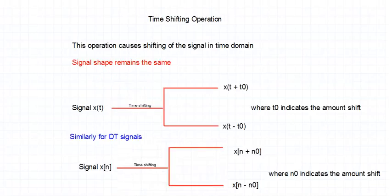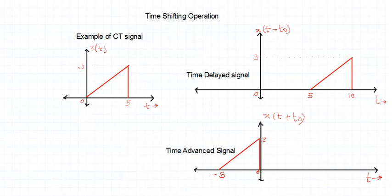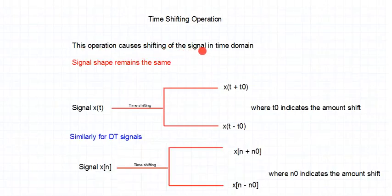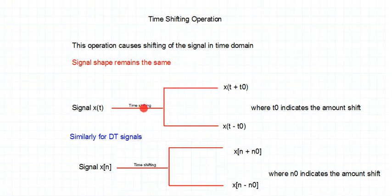We will first look at the time shifting operation. As the name indicates, it is going to shift the signal with respect to time. This particular operation causes shifting of the signal in the time domain. When you are doing this particular operation, the signal shape remains the same. Let us try to understand conceptually what is the time shifting operation.